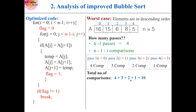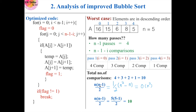Writing this in terms of n, the total comparisons are n×(n-1)/2. Solving this gives a polynomial expression, and considering only the higher order term, the worst case is O(n²).